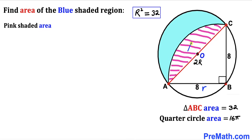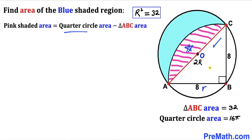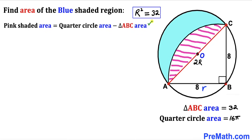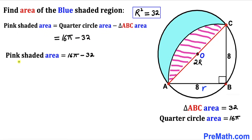Now let's calculate the area of the pink shaded region. The pink shaded region area equals the quarter circle area minus the area of triangle ABC. We have 16π minus 32, so the pink shaded area turns out to be 16π minus 32.